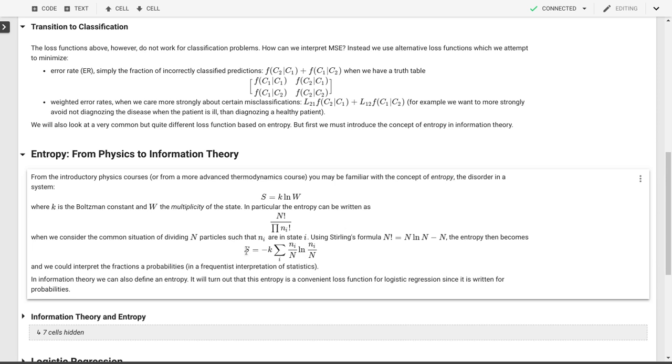So it'll turn out that something very similar will happen in information theory and we'll write something very similar where we have a product of a probability with the log of that same probability. So that will be in the next video when we go into the information theory definition of entropy.